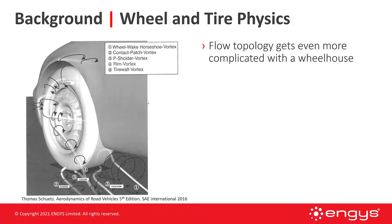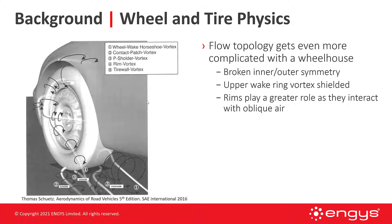With a wheelhouse there are lots of different interactions. There's broken inner and outer symmetry — now there's air moving under the vehicle on one side of the tire and external air around the tire: two different environments. The upper wake ring vortex is really shielded, meaning air isn't moving over the top of the tire through the treads the same way as with a standalone tire. Rims play a greater role as they interact with oblique air coming around the front of the vehicle or in the wheelhouse.